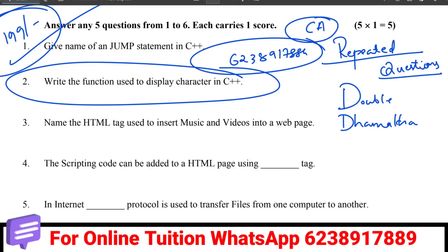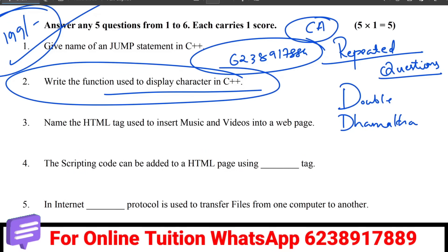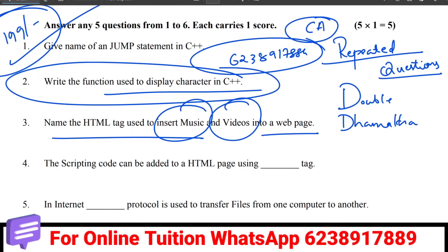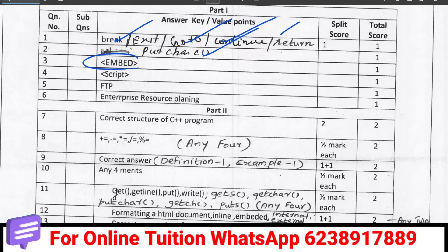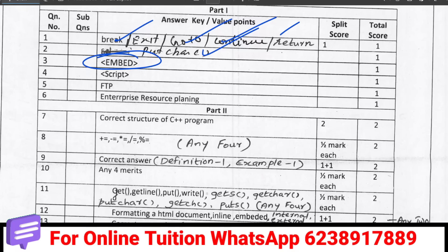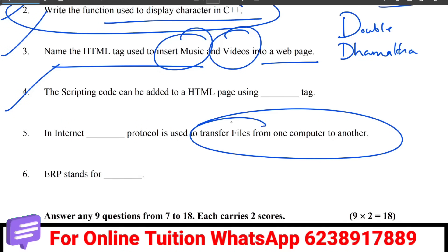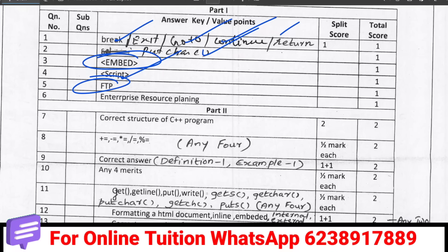Then there is a question about character display and usage functions — putchar is that function. Then, name the HTML tag used to insert music and videos into a webpage. Also, scripting code can be added to an HTML page using a script tag. In the internet, FTP — File Transfer Protocol — is used to transfer files from one computer to another.